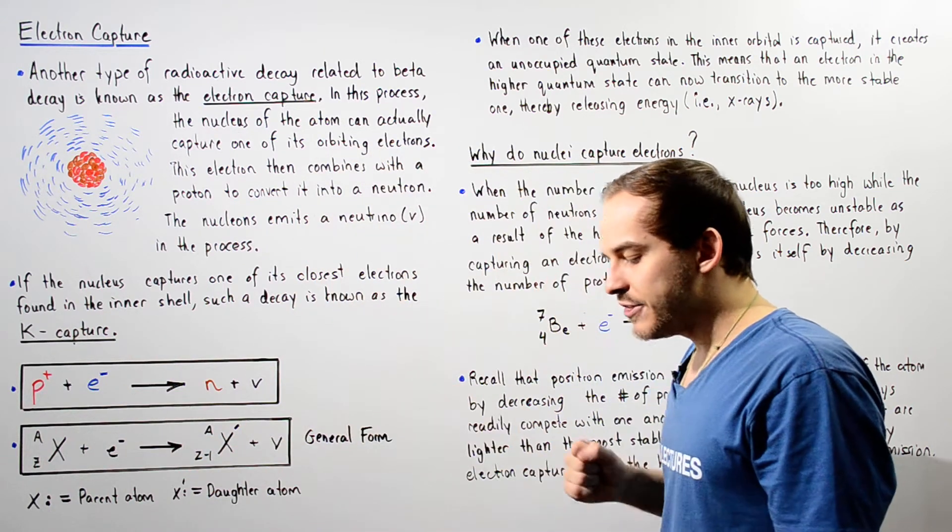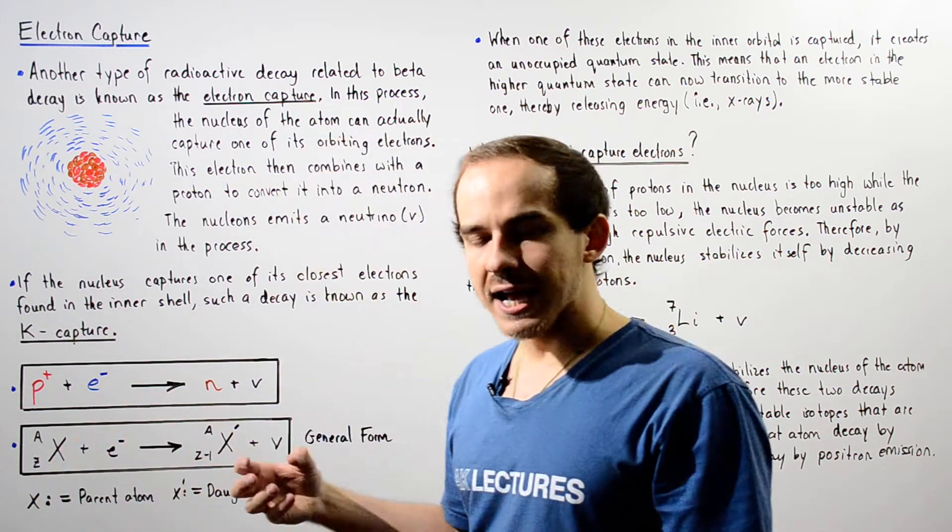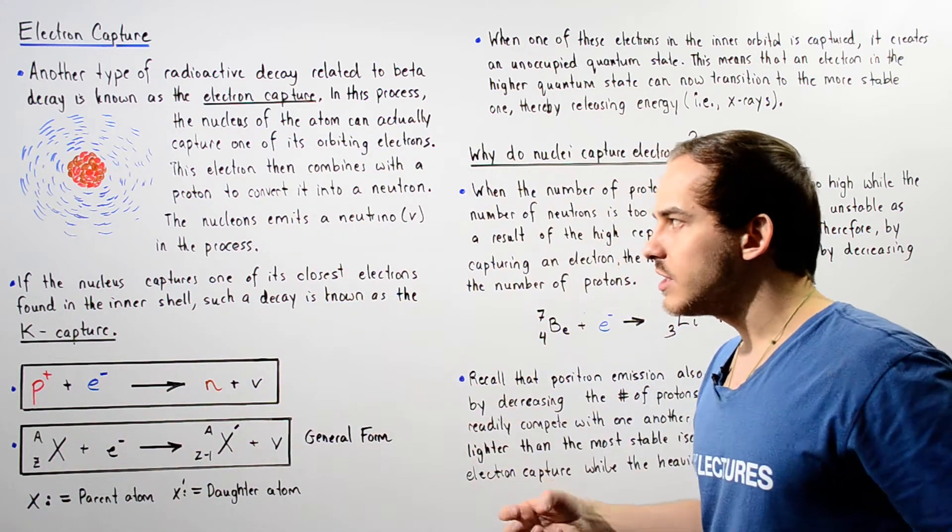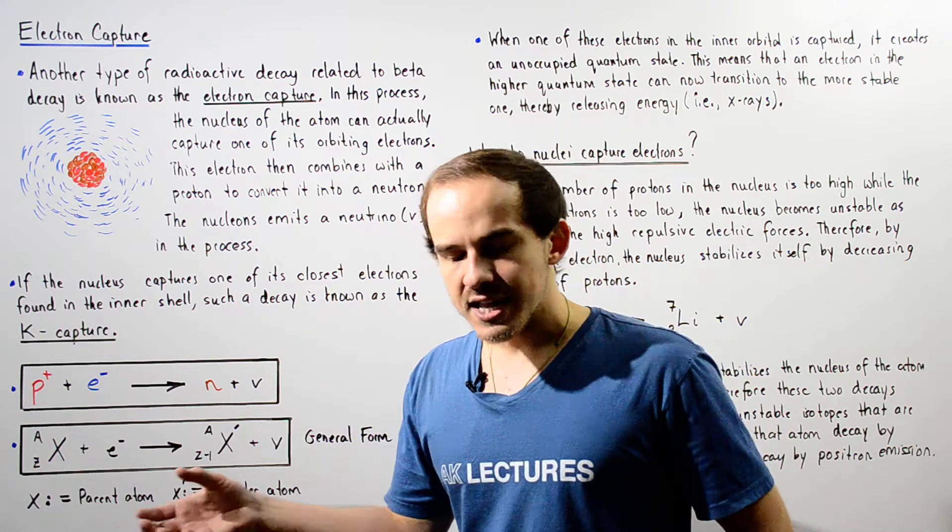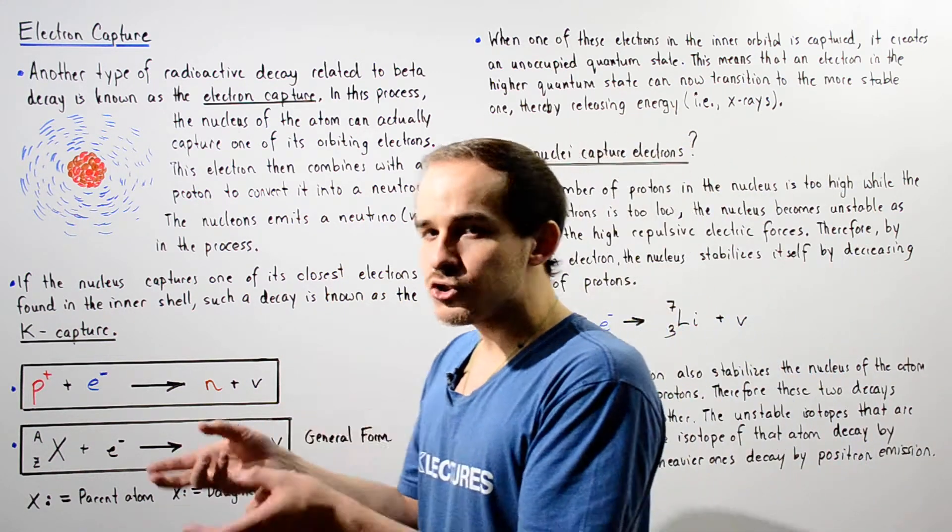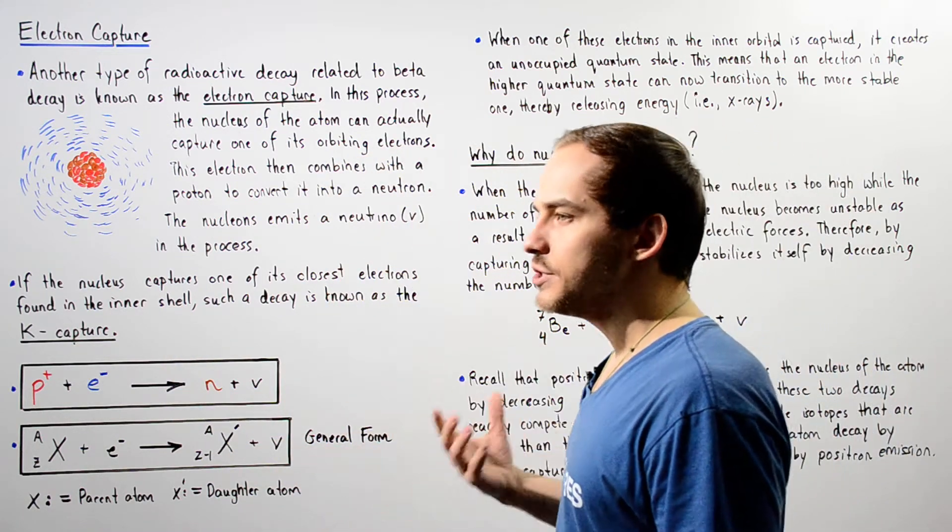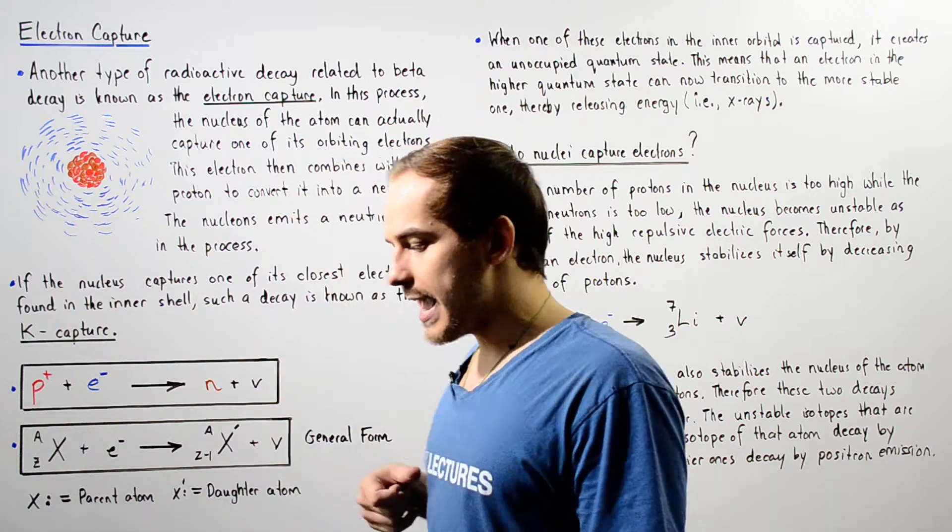And once it is brought inside that nucleus, that electron basically combines with our proton to form a neutron. And in the process, the proton and electron essentially disappear and a neutrino particle is released into the surrounding area.